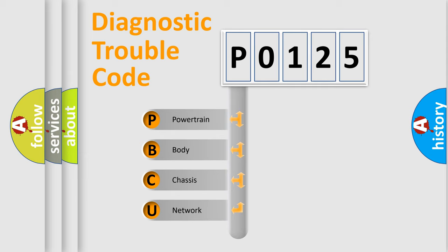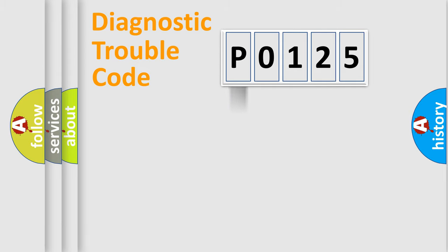We divide the electric system of automobile into the four basic units: Powertrain, Body, Chassis, and Network. This distribution is defined in the first character code.